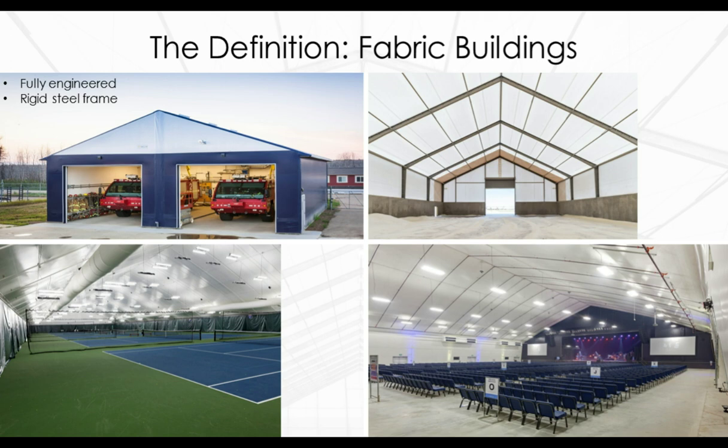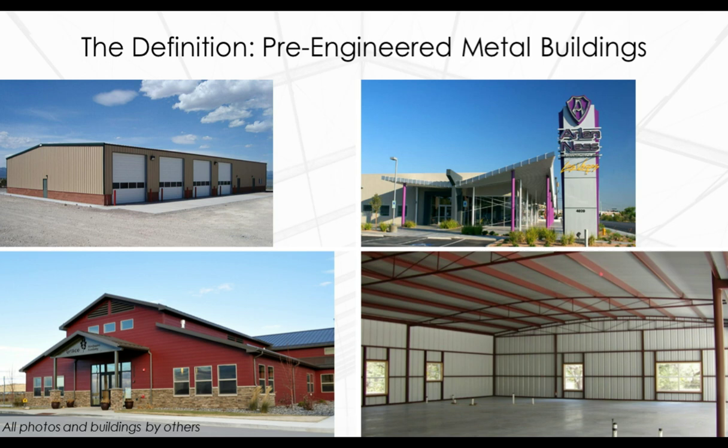Pre-engineered metal buildings are designed using an I-beam steel frame with sheet metal cladding. They are becoming common and are used for everything from retail establishments to big-box stores to hospitals and churches. These buildings use the same proven engineering principles as conventional buildings and are designed to site-specific requirements. They are designed and fabricated at a manufacturing facility and then transported to the building site where they are field-assembled.